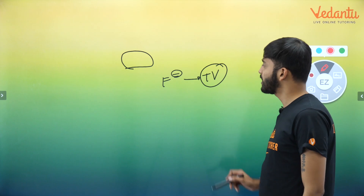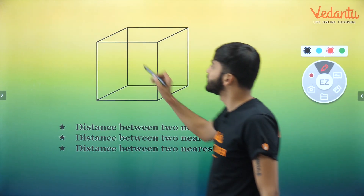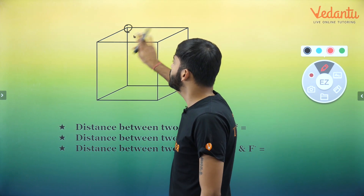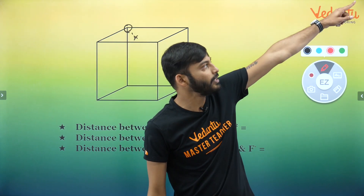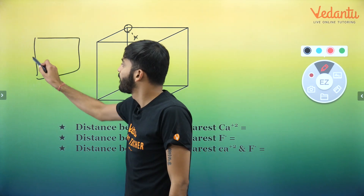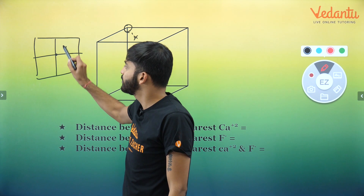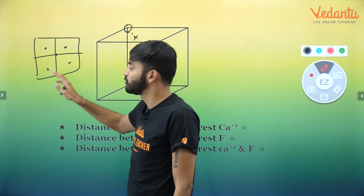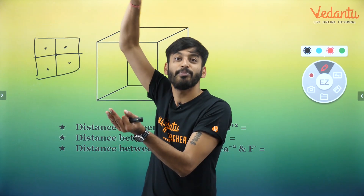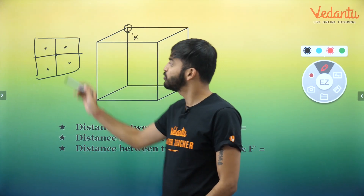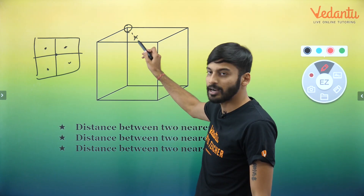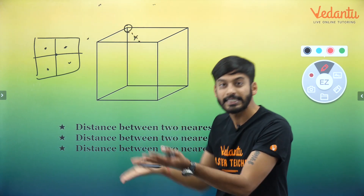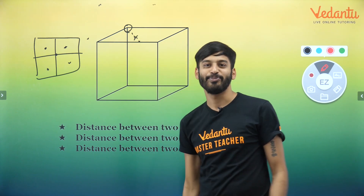See calcium here at the corner. Next to it, in each of the 8 small cubes around it, you have an F⁻ ion. So one calcium atom will be touching 4 F⁻ on the ground floor and 4 F⁻ on the first floor — touching all 8 F⁻. Hence the coordination number is 8:4. Calcium is touching 8 F⁻ ions.